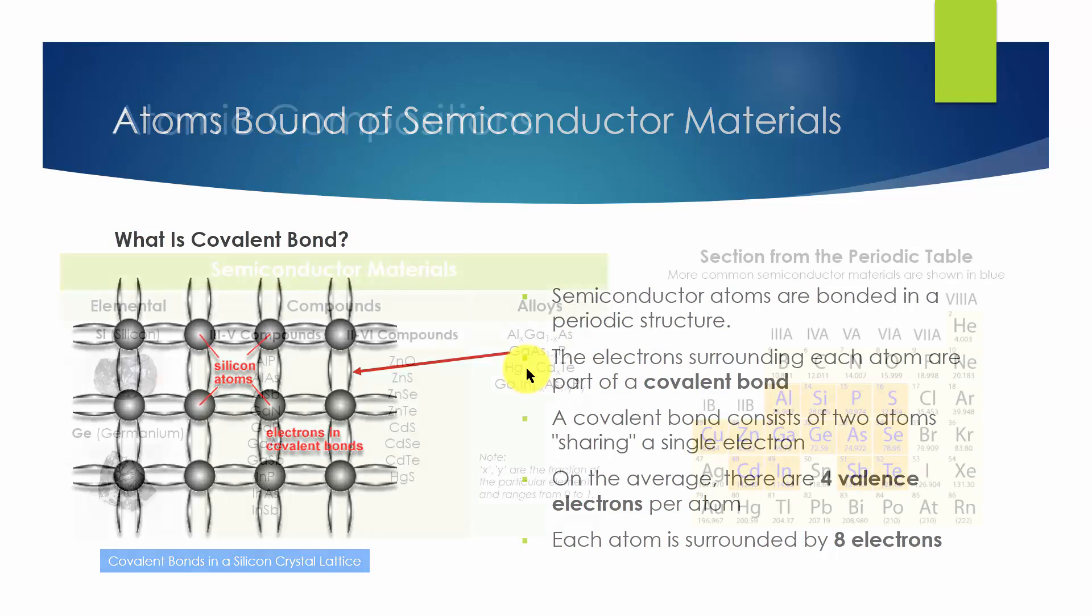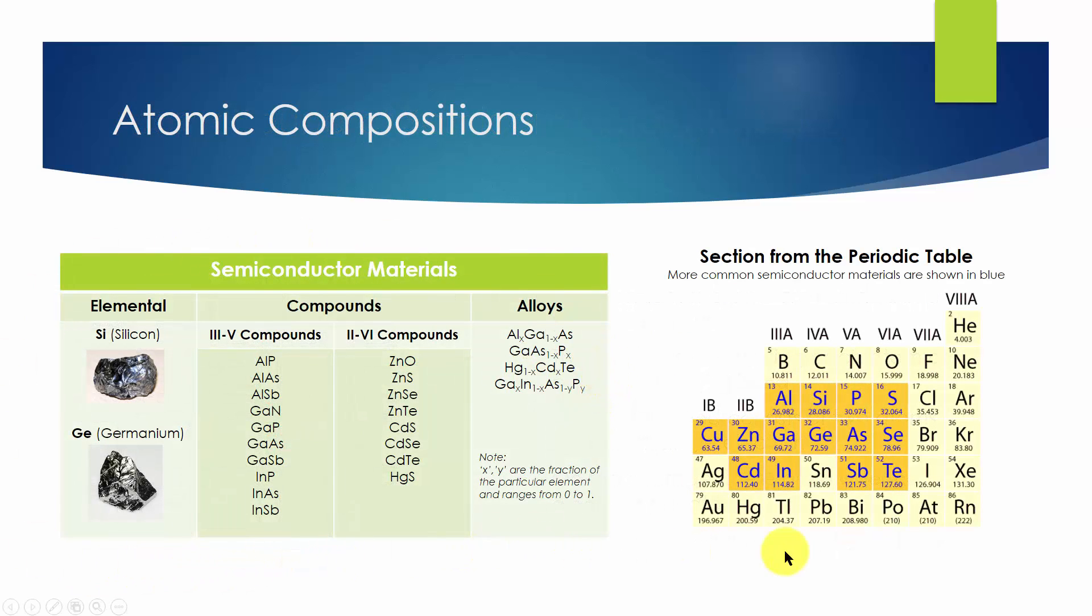This table lists the most common atomic compositions of semiconductors. There are three types of semiconductor materials: elemental materials, compounds, and alloys.